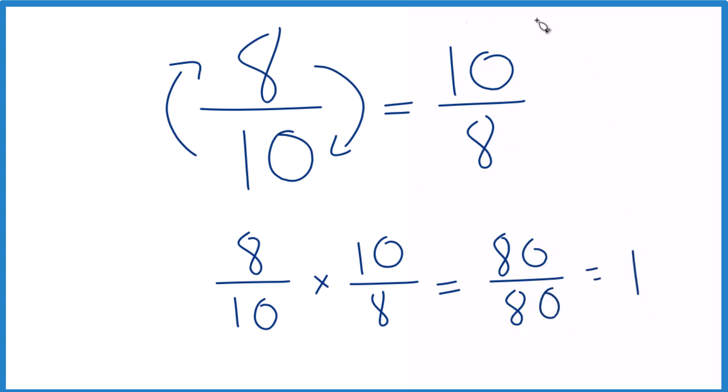So we know we did this correctly. The reciprocal for 8 tenths is 10 eighths. We could simplify this, though, since these are both even numbers. We could call this 5 fourths. We're just dividing the numerator and denominator by 2.